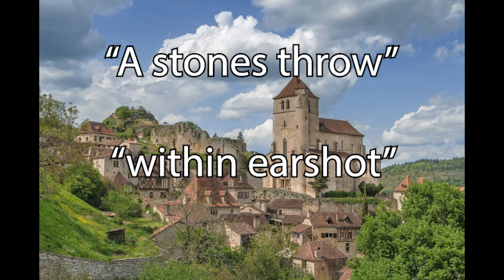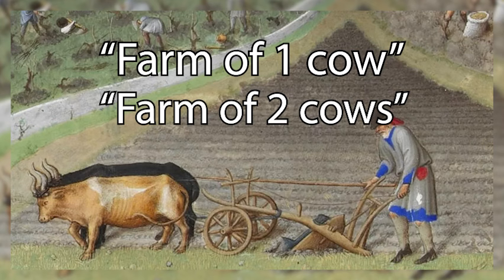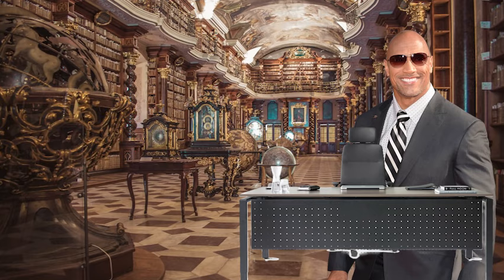Or within earshot. People didn't say how many acres they owned — it was measured by if they could grow enough food to get through the winter. Since Irish farmers used a lot of cow products, they would say they have a farm of one cow or a farm of two cows, indicating how many grazing cows their land could support, which depends on the quality of land and not the acreage owned.